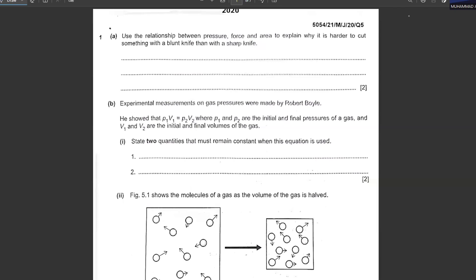Okay students, let's get started with O-levels and IGCSE past papers for kinetic molecular theory. Use the relationship between pressure, force and area to explain why it is harder to cut something with a blunt knife than with a sharp knife. So what will we say here? A sharp knife has a smaller area and this causes the pressure to increase.